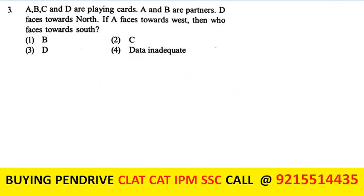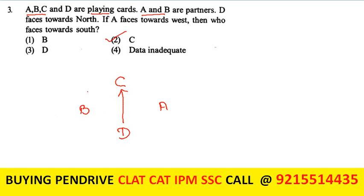Next: there are four persons playing cards. A and B are partners, meaning D and C must be partners. D faces towards north. A faces towards west, so A sits here facing west, and B sits on the opposite side. The question is: who faces towards south? C faces towards south. Hence, the second option is my answer.